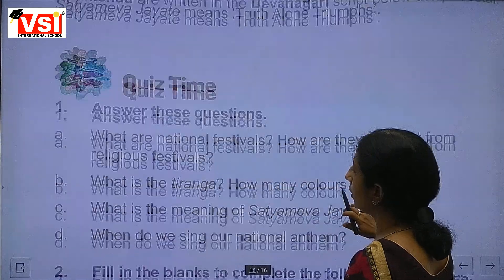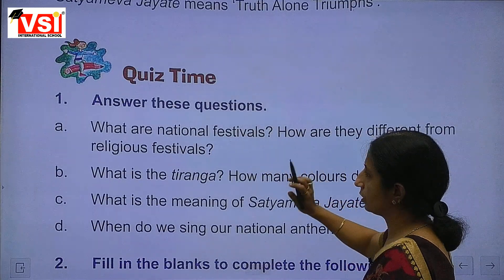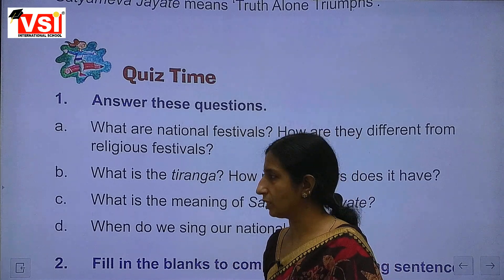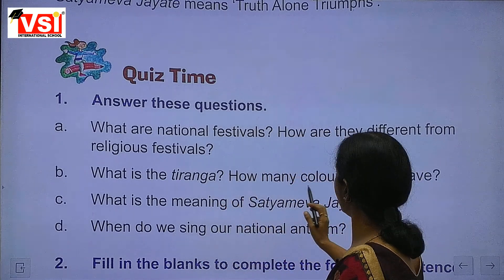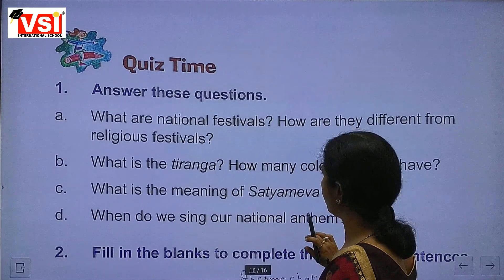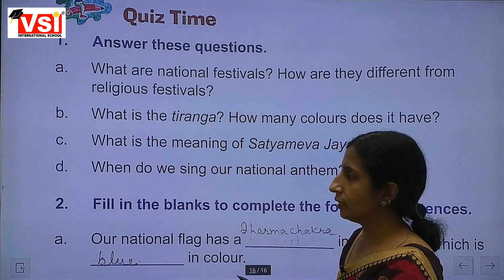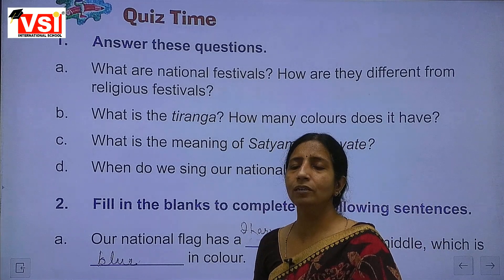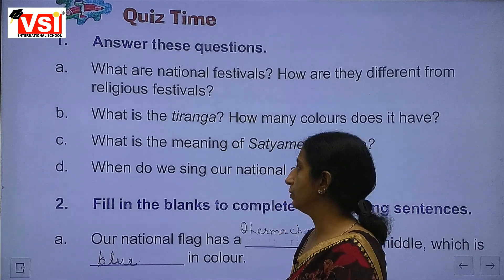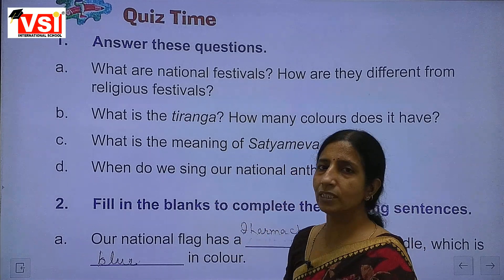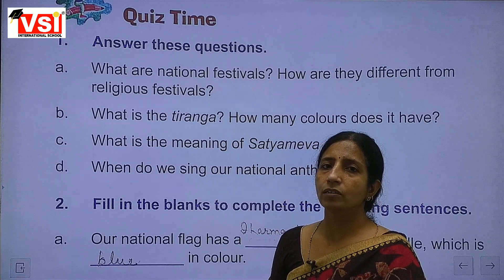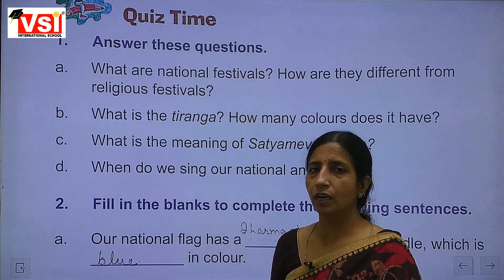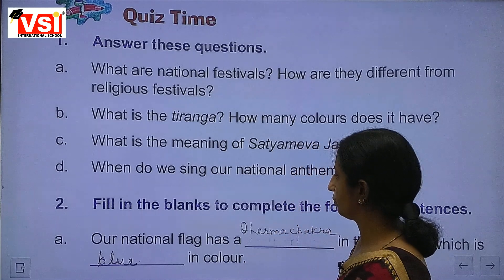Now for questions: What are national festivals and how are they different from religious festivals? National festivals are celebrated on national events, and religious festivals are celebrated on religious occasions. What is the Tiranga? Our national flag — it has three colours: saffron, white, and green. What is the meaning of Satyamev Jayate? Truth Alone Triumphs. When do we sing our national anthem? On national occasions and national festivals.